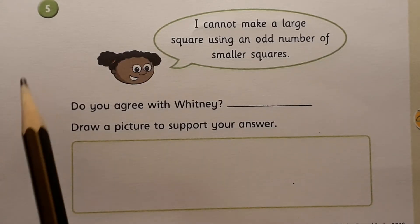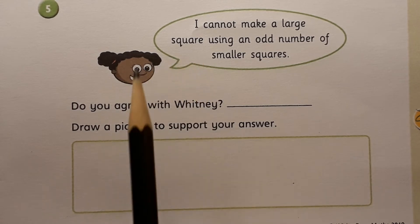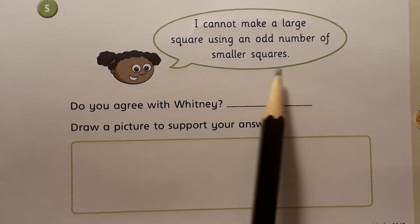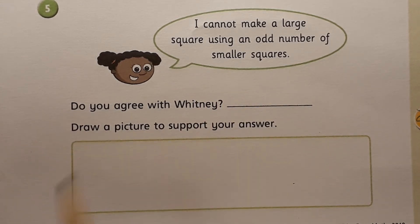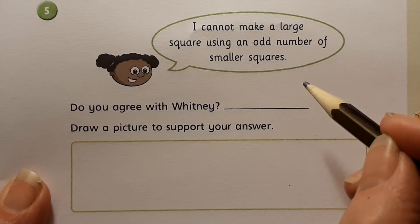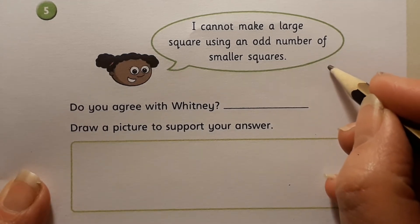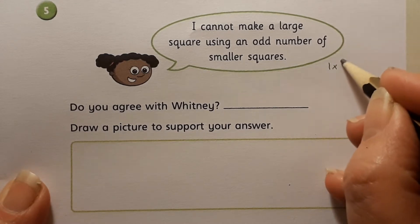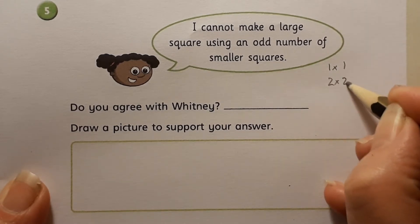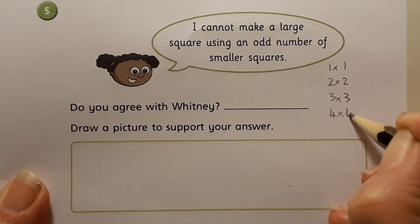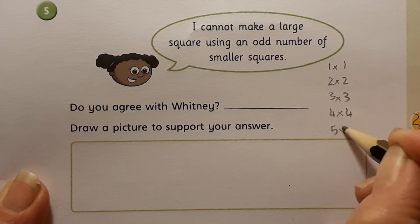Now we're moving on to question five, which says: 'I cannot make a large square using an odd number of smaller squares.' Do you agree with Whitney? The clue I'm going to give you is those special square numbers. I'm going to go through what I mean: one times one, two times two, three times three, four times four, five times five.